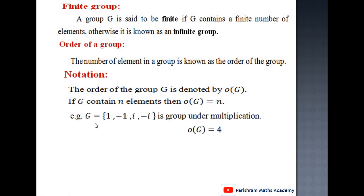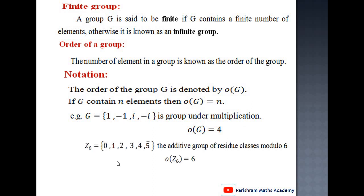For example, G = {1, -1, i, -i} is a group under multiplication. This group contains 4 elements, therefore order of G equals 4. Now Z₆: Z = {0̄, 1̄, 2̄, 3̄, 4̄, 5̄}, the additive group of residue classes modulo 6. This group contains 6 elements, therefore order of Z₆ is 6.